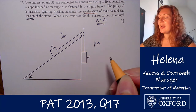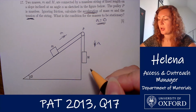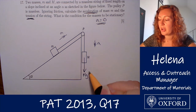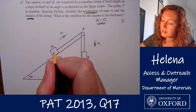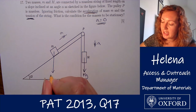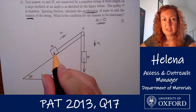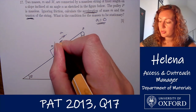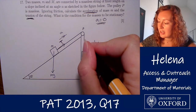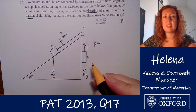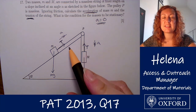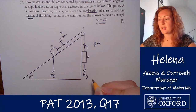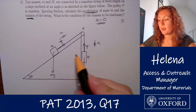So we're being asked to calculate the acceleration of mass little m, the tension of the string, and the condition for the masses to be stationary — that is, for a to equal zero. Let's think about the forces acting on these blocks. We have the weights of both of them: a weight of big Mg acting downwards on block M, and a weight of little mg acting vertically downwards from the centre of block m. We also have the tension in the string, acting up the slope on m and vertically upwards on M. The magnitude of the tension is the same for both.